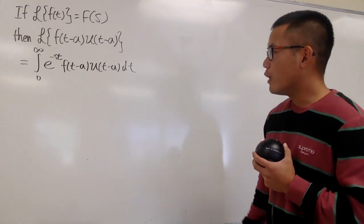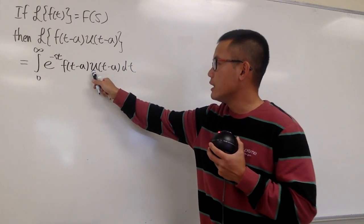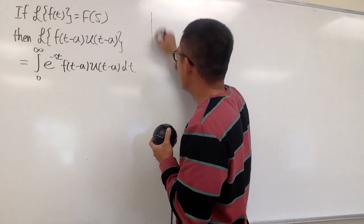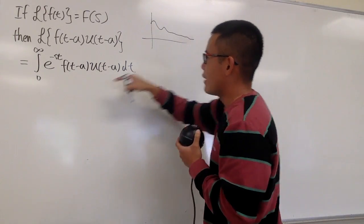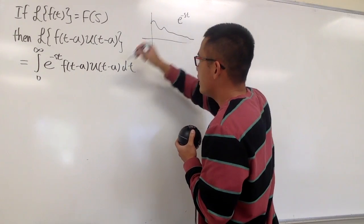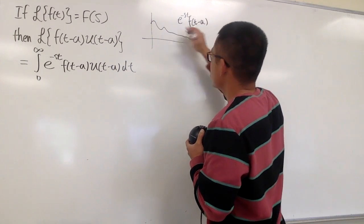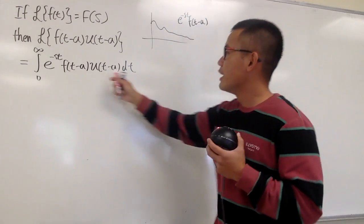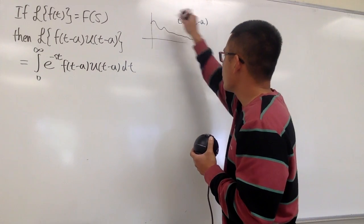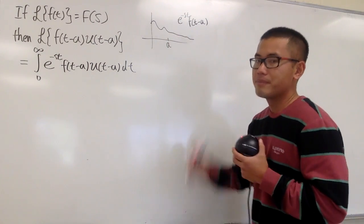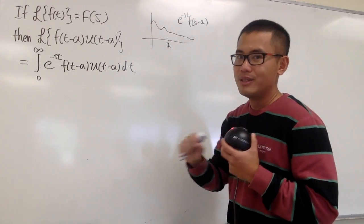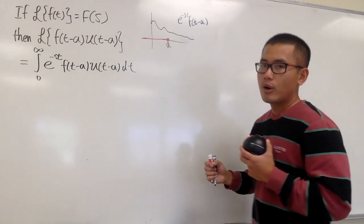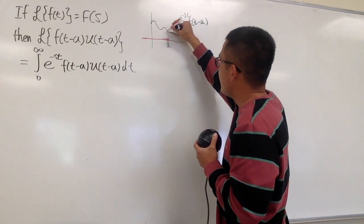Now we have to remember what's the effect of multiplying by u of t minus a. Let me just graph this. Suppose we're looking at the graph of e to the negative st times f of t minus a. The moment we multiply this by u of t minus a, anything before a will be zero, and then up to a it's an open circle, and anything after a stays the same.